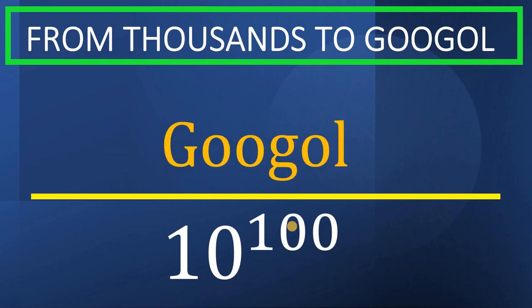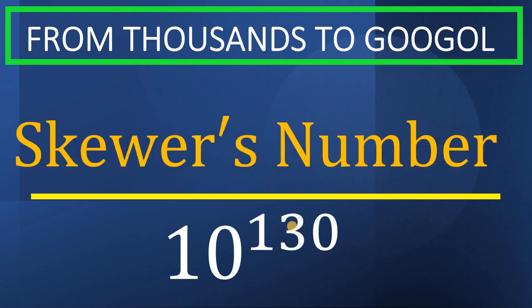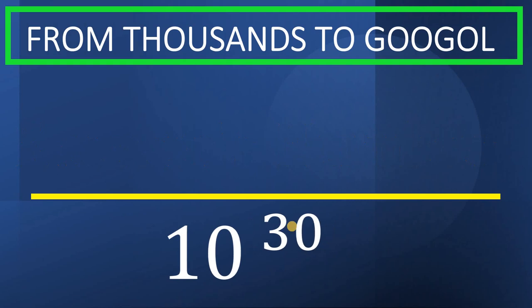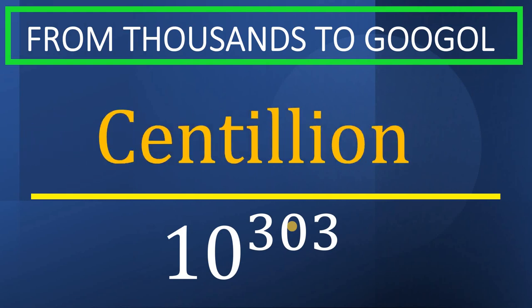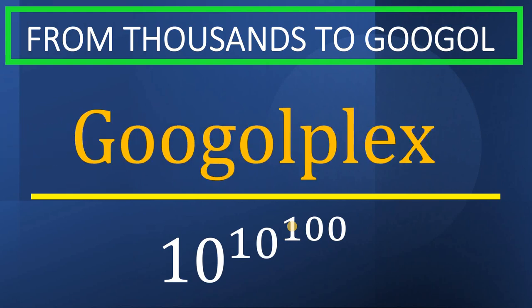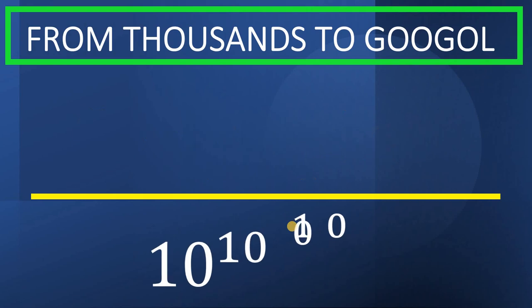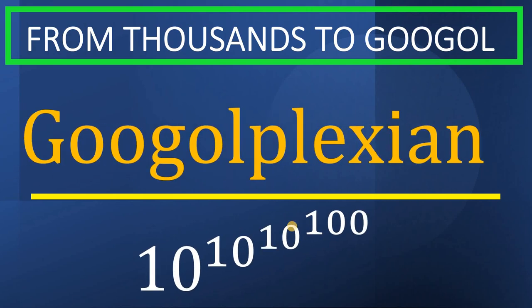Here's some bonus: 10 raised to 130 is called Skewes' number. 10 raised to 303, or 1 followed by 303 zeros, this is called centillion. 10 raised to a googol, it is called a googolplex. And 10 raised to a googolplex, it is called a googolplexian. And that's all for this video, see you in the next.